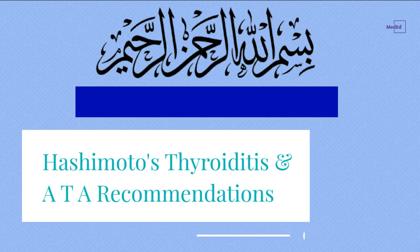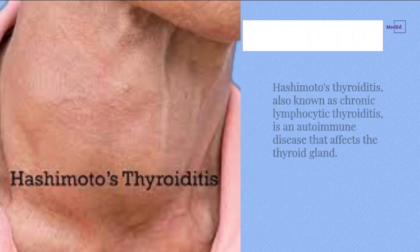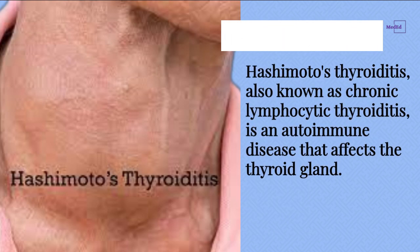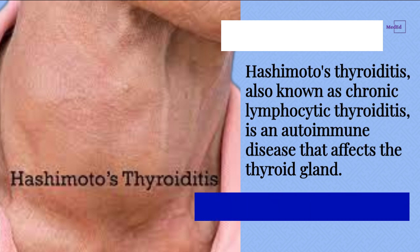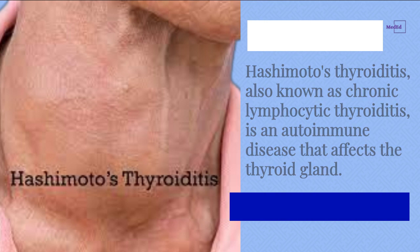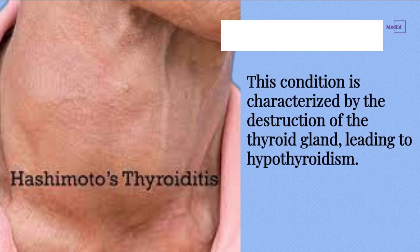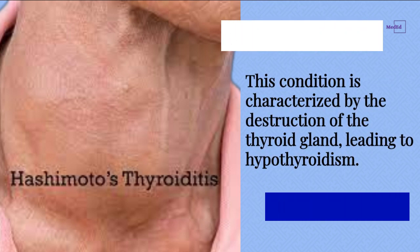Hashimoto's Thyroiditis, also known as chronic lymphocytic thyroiditis, is an autoimmune disease that affects the thyroid gland. This condition is characterized by the destruction of the thyroid gland, leading to hypothyroidism.